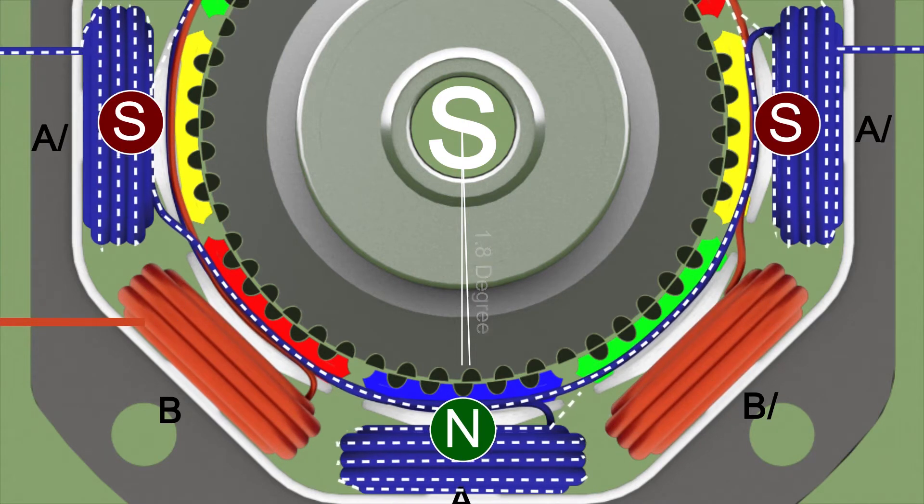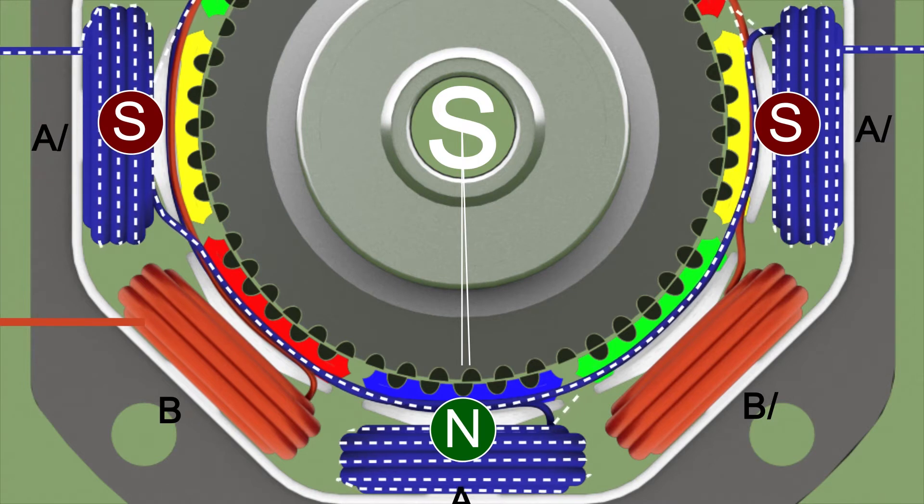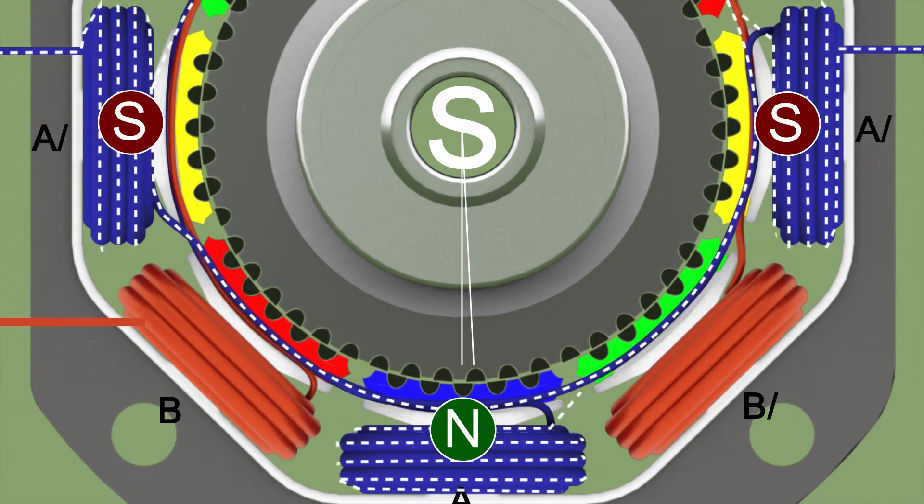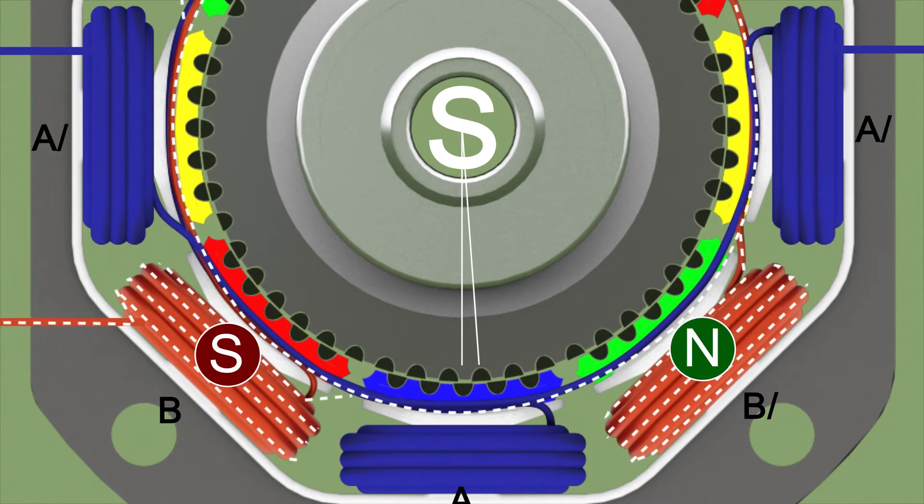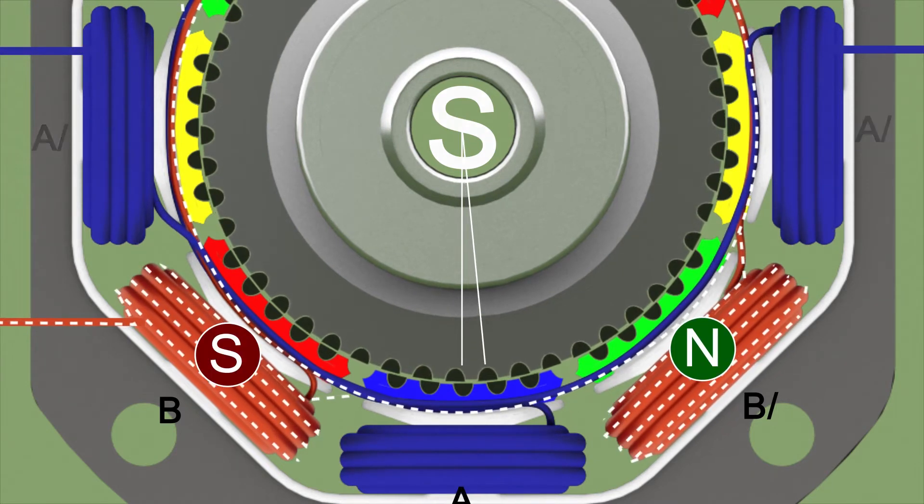Now, we again energize set A with the opposite polarity. Again, the rotor is rotating 1.8 degrees. When we repeat this process, we can achieve highly accurate motion of the motor.